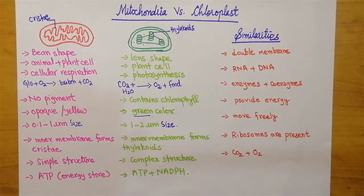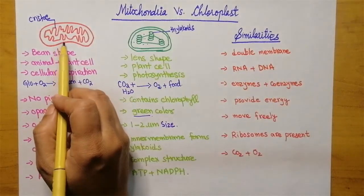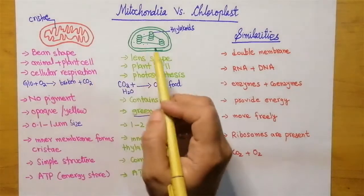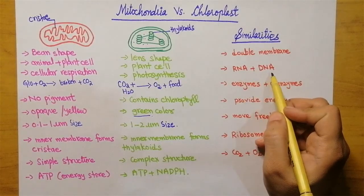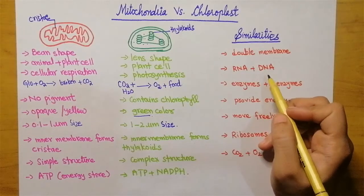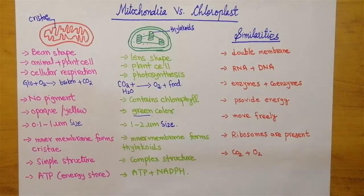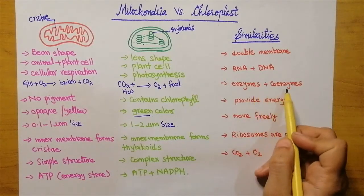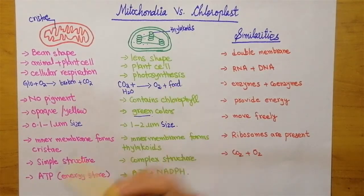However, although they are different from each other, they still have some features which are similar. The first feature is that they are both double-membrane organelles — mitochondria has two membranes and chloroplast also has two membranes. They both have RNA and DNA. I told you in my previous lesson that chloroplast and mitochondria have their own DNA, and because of this reason they are self-replicating organelles.